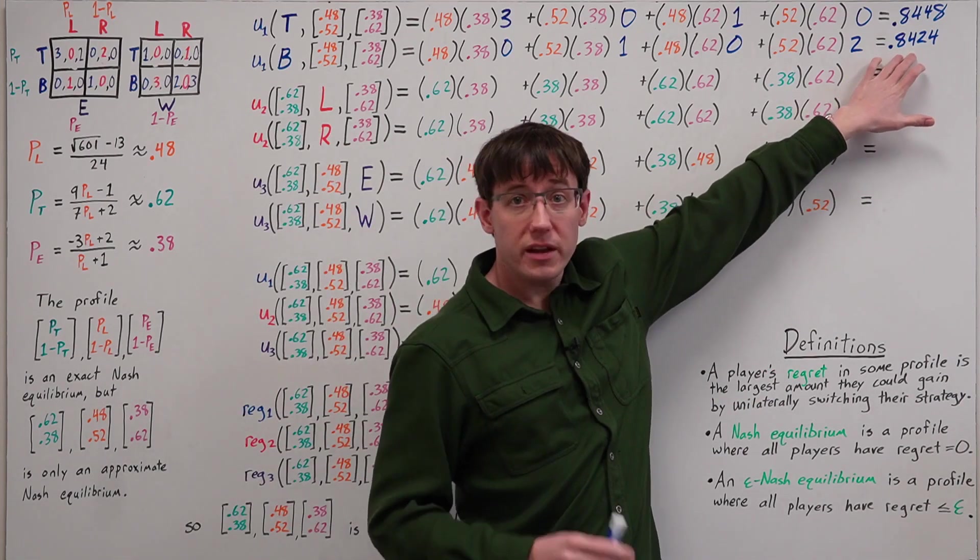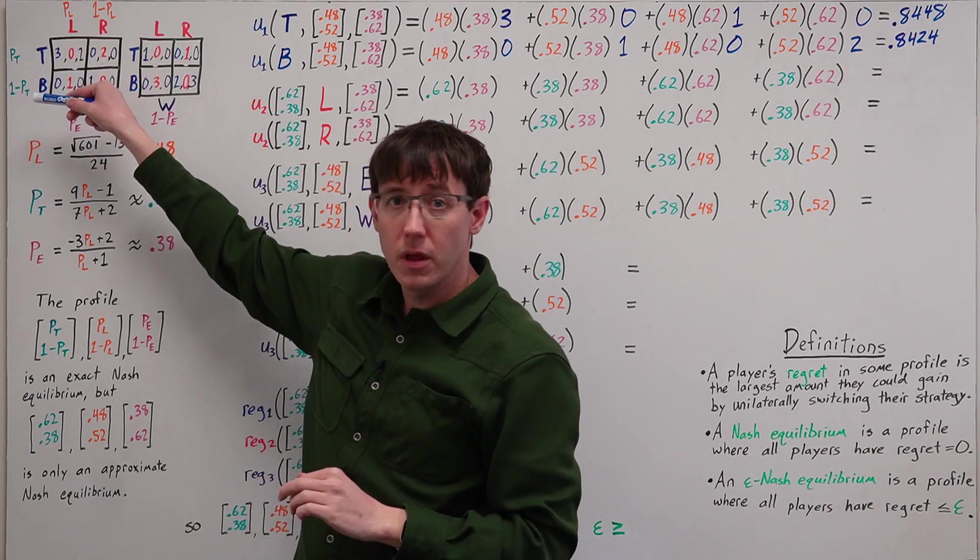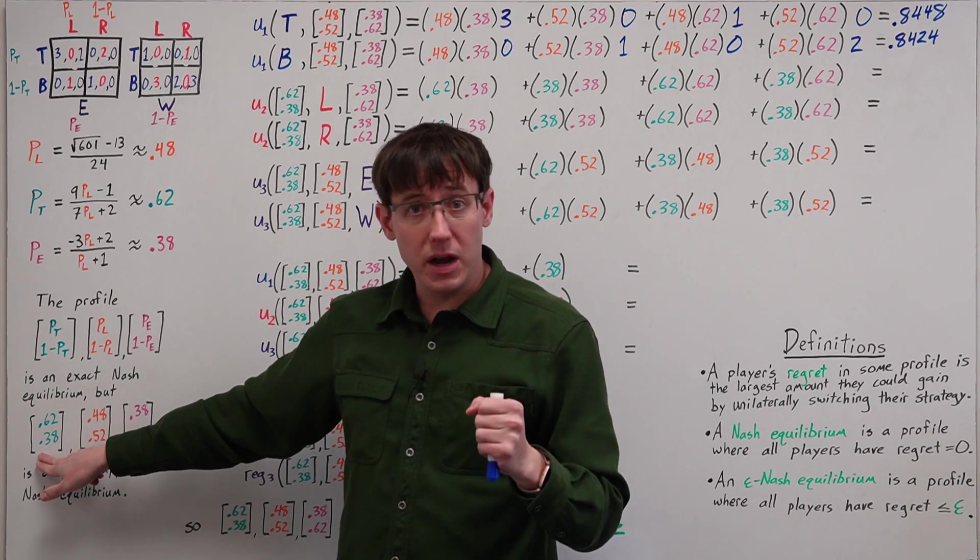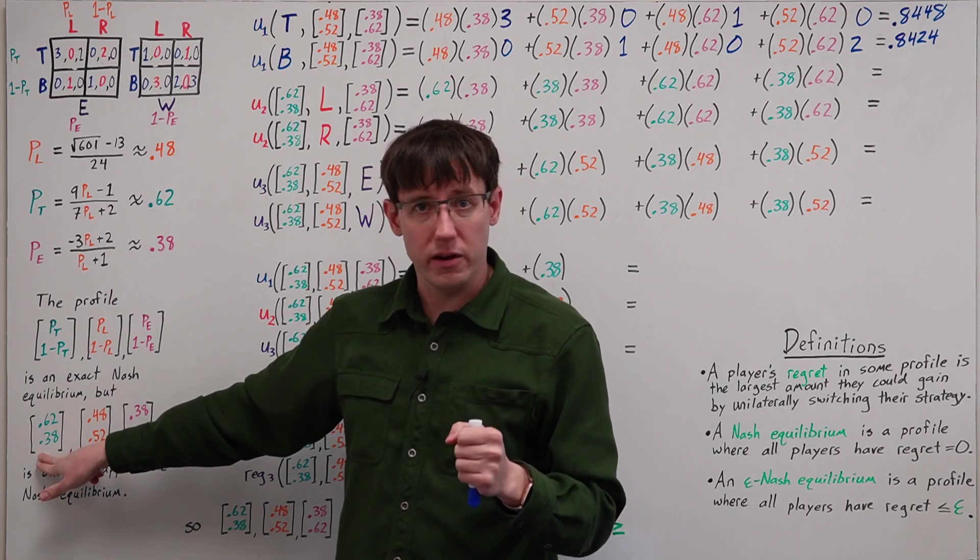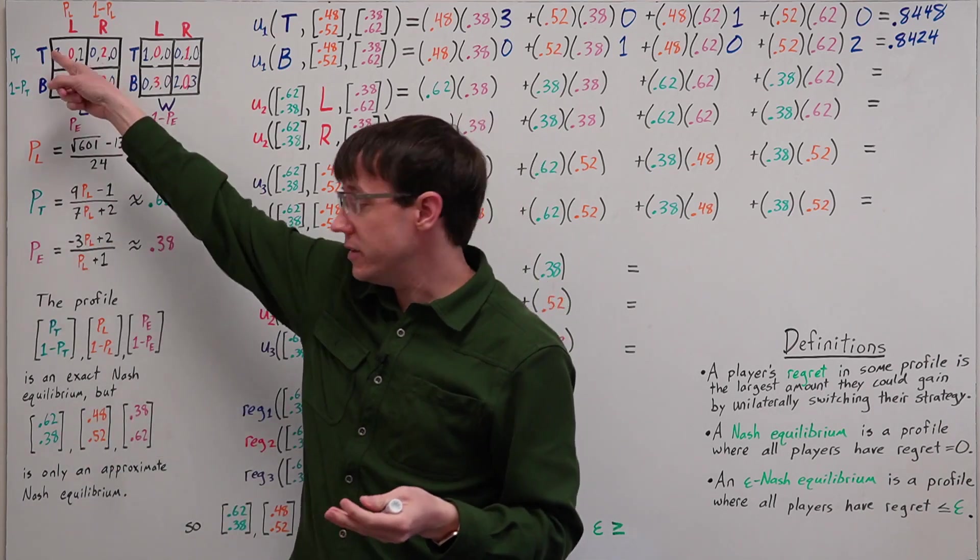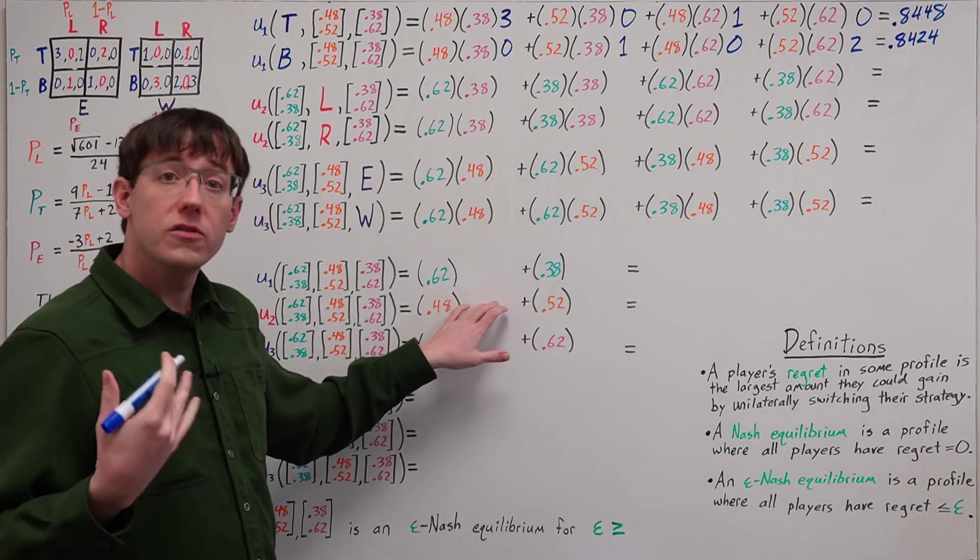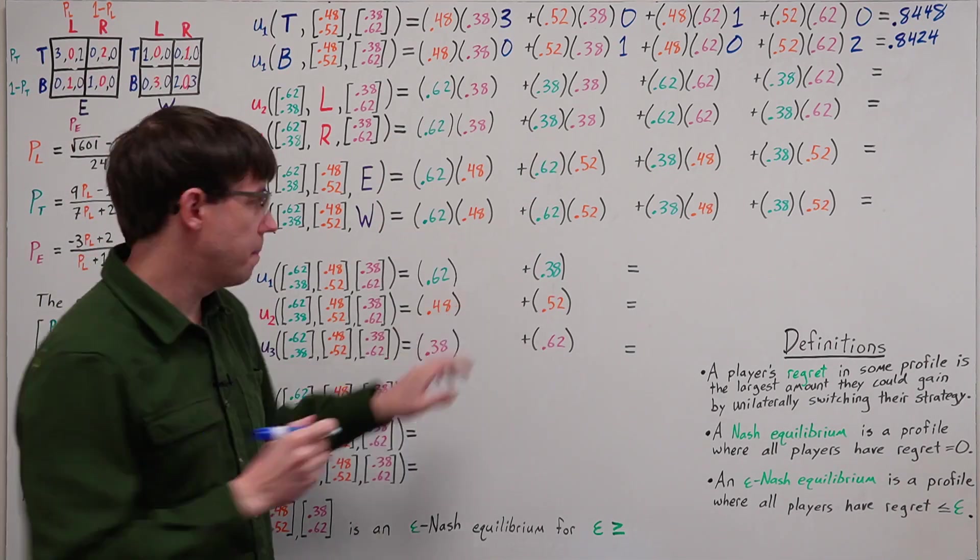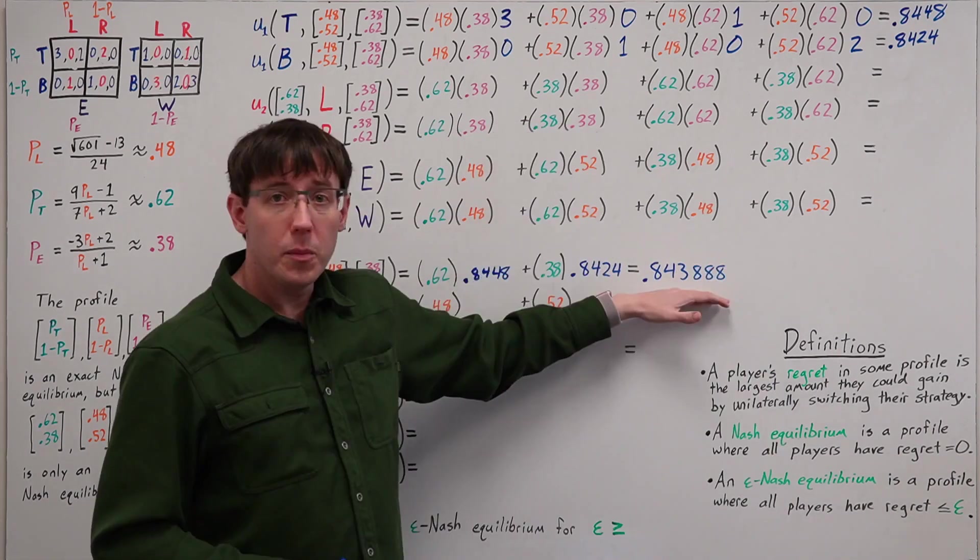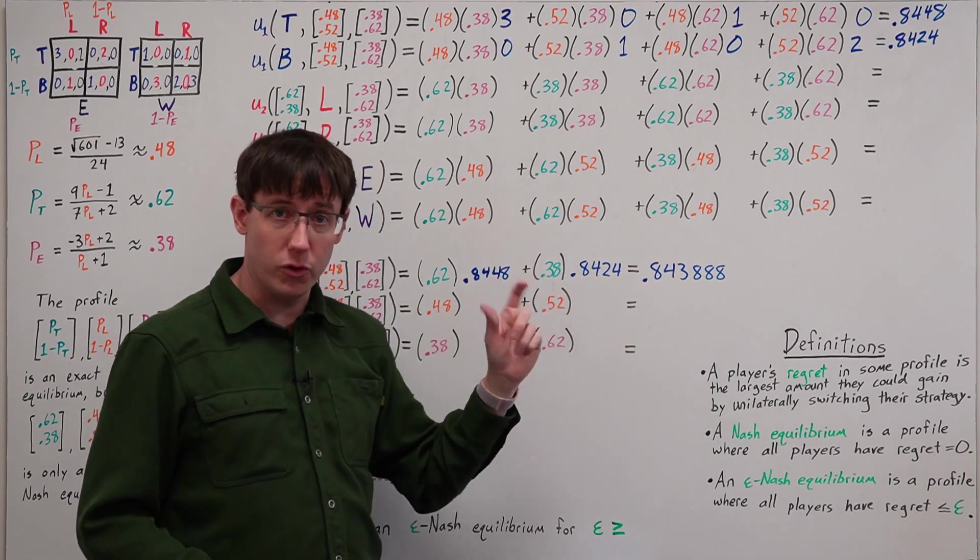Now that we know the expected utility for both of player one's actions, it's easy to calculate the expected utility for player one randomizing according to their mixed strategy. That will just be 0.62 times their expected utility when they play T, plus 0.38 times their expected utility when they play B. So we can fill that in here. And when we add it up, player one's expected utility for the mixture falls between the utilities for the two actions.